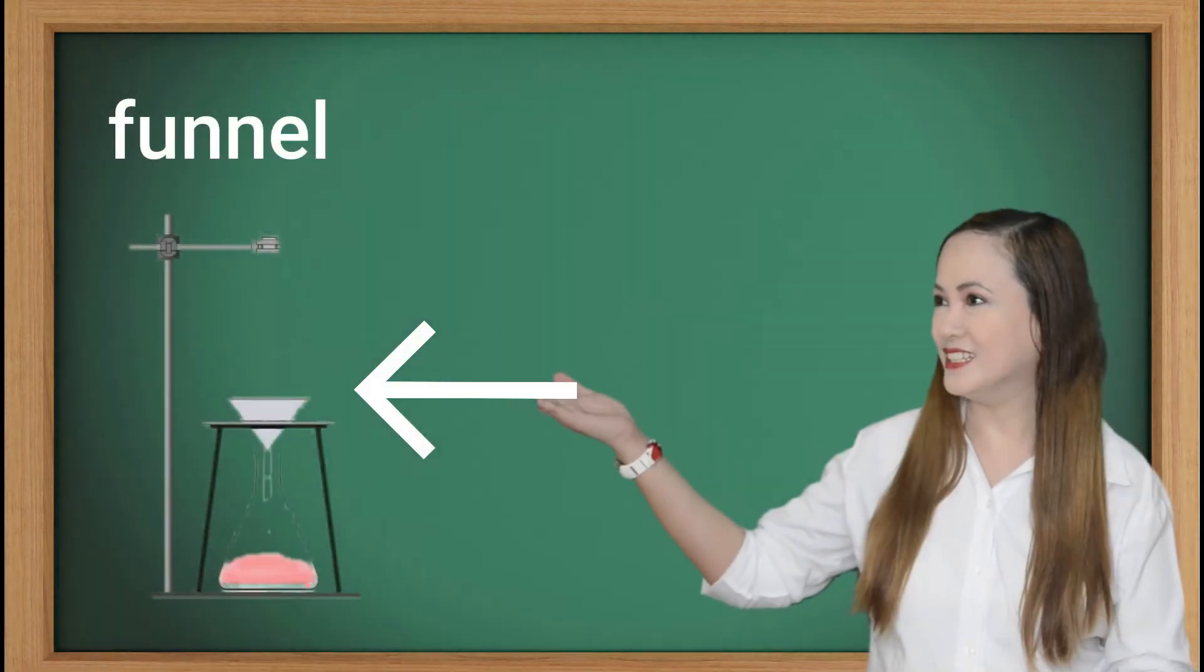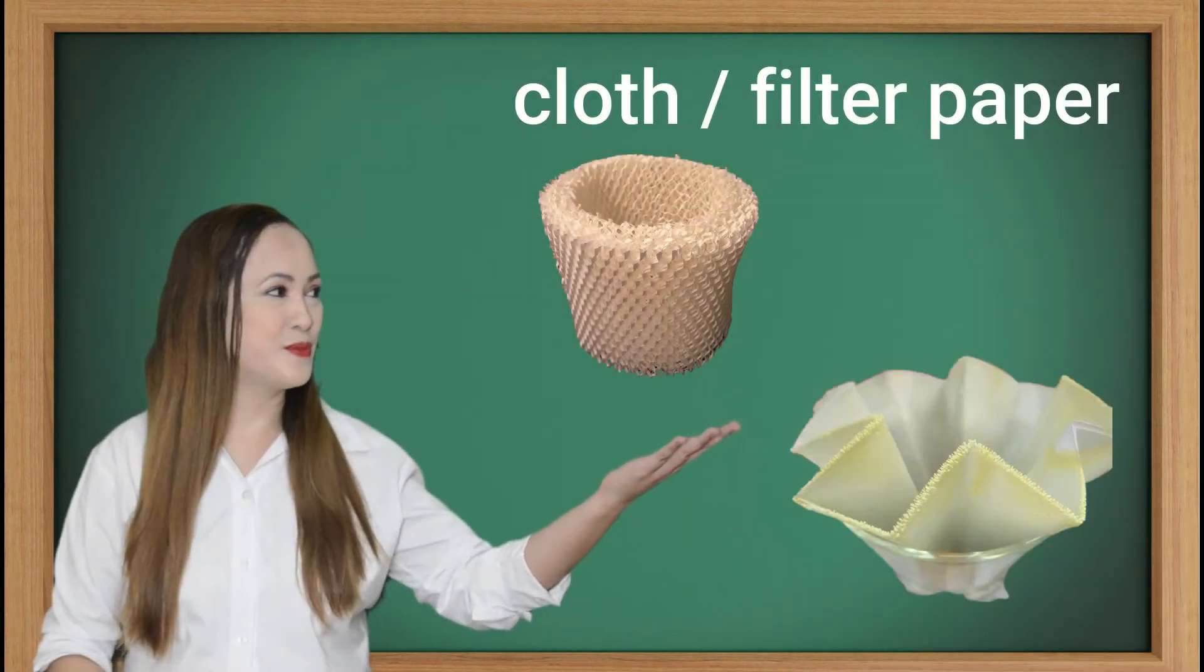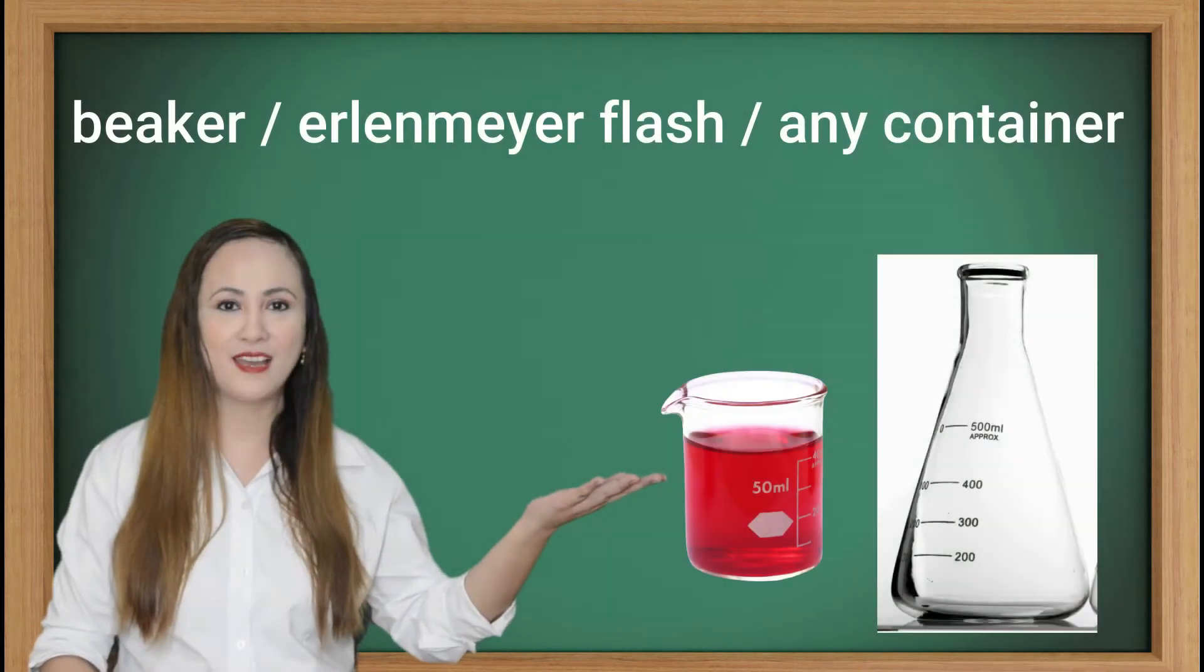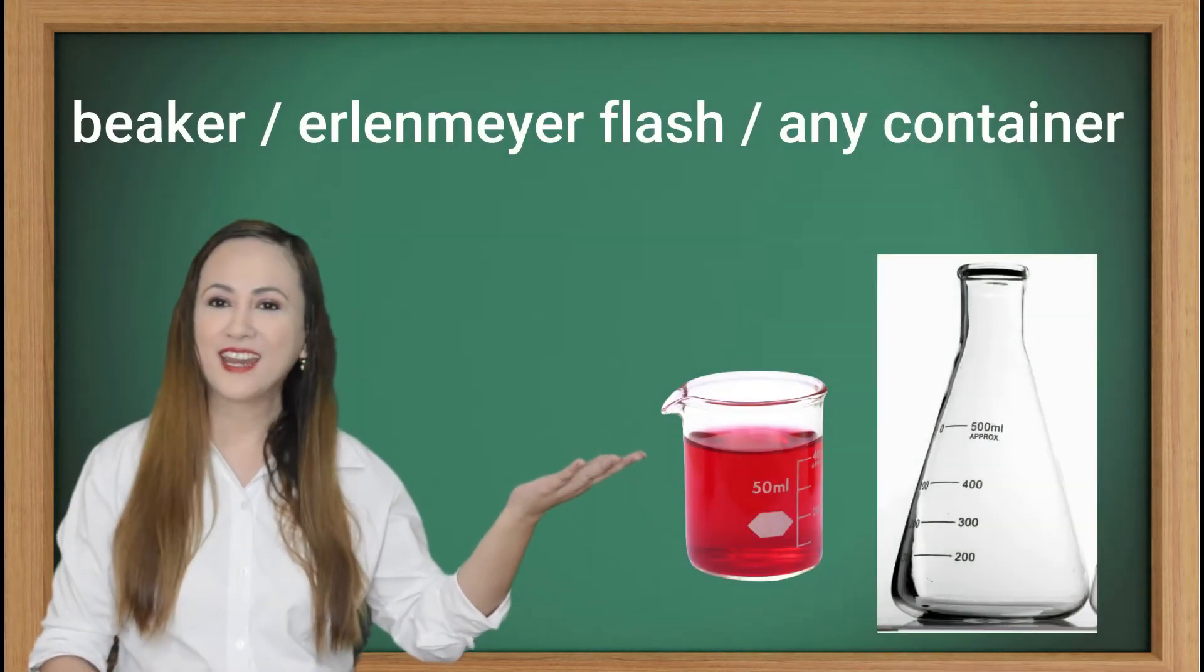The apparatuses used in filtering are funnel, cloth or filter paper, iron stand and iron ring, beaker or Erlenmeyer flask, or any container.